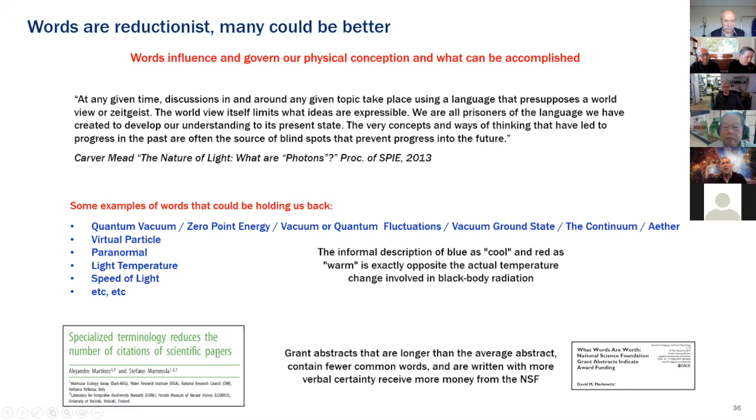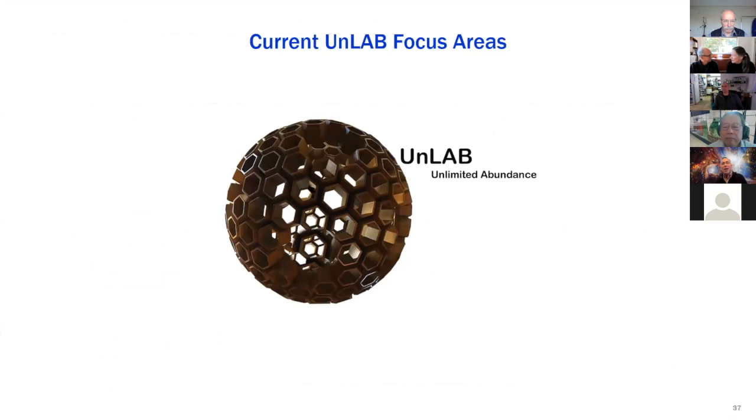And here's a couple of things I ran across that is interesting relative to words is that specialized terminology reduces the number of citations of scientific papers. So the more specialized your terminology is, the less citations you are. Yet on the other hand, grant abstracts that are longer than average, contain fewer than common words and are written with more verbal certainty, receive more money from the NSF. But you'll get less cited less times. So anyway, the influence of words is very important. People are hesitant to cite what they don't understand. And we may have more in common than we know. That's one of the things we're going to continue talking about is how we can use words that include all these brilliant, curious people in other fields. Right. So one of the reasons like I don't even want anything in a slide. I can't really explain anybody else's work. And the more technical it gets, the more we leave each other out. Yeah.